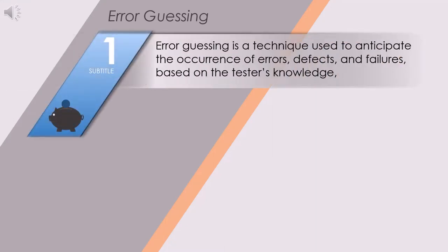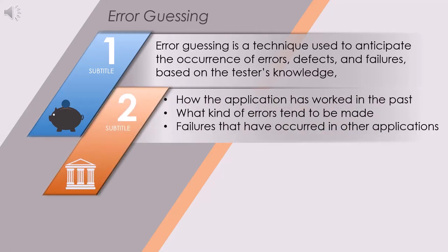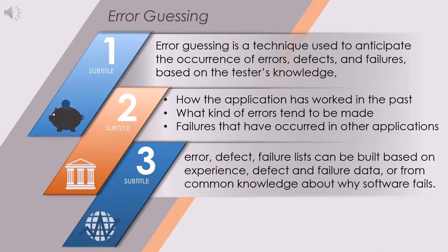Now let's go through the important points of error guessing. Point 1: error guessing is a technique used to anticipate the occurrence of errors, defects, and failures based on the tester's knowledge. Point 2: while thinking, we ask — how has the application worked in the past? What kind of errors tend to be made? What failures have occurred in other applications? Point 3: error, defect, and failure lists can be built based on experience, defect and failure data, or from common knowledge about why software fails.